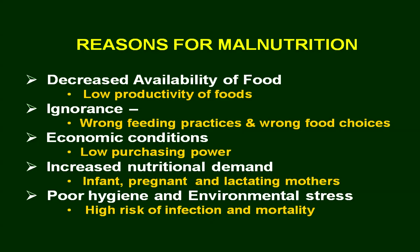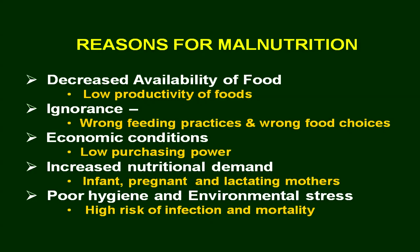Number one: decreased availability of food — there is not enough productivity of food. Number two is ignorance. There are chances that you wrongly choose the food, and in case of children and infants, you practice wrong feeding methods. People do not know what is the right kind of feeding process for infants. Third is economic condition — you do not have enough money to buy nutrient-containing food.